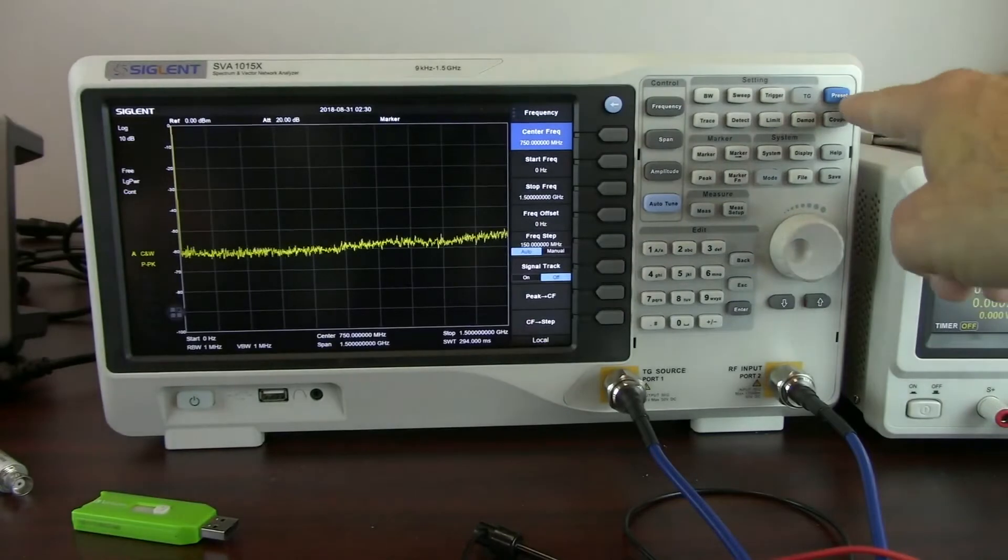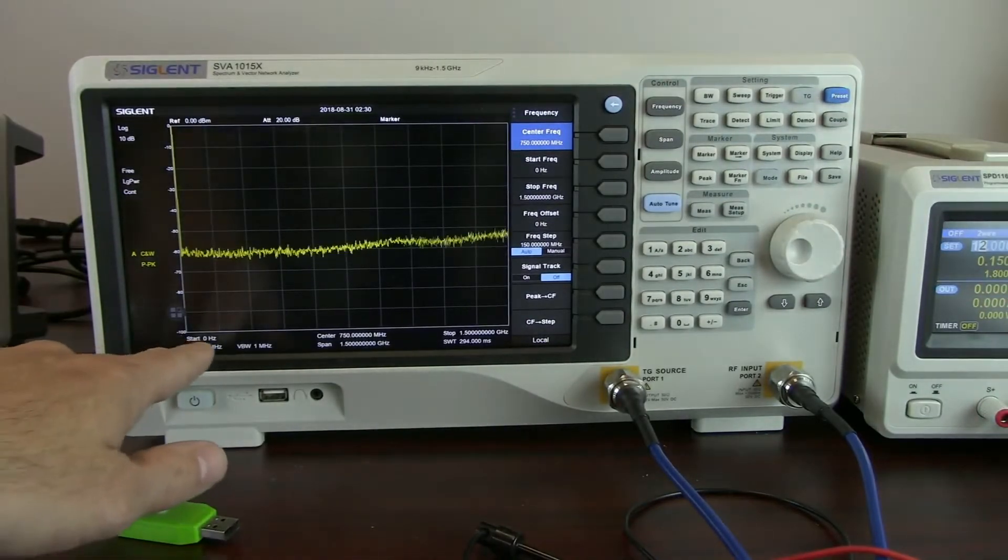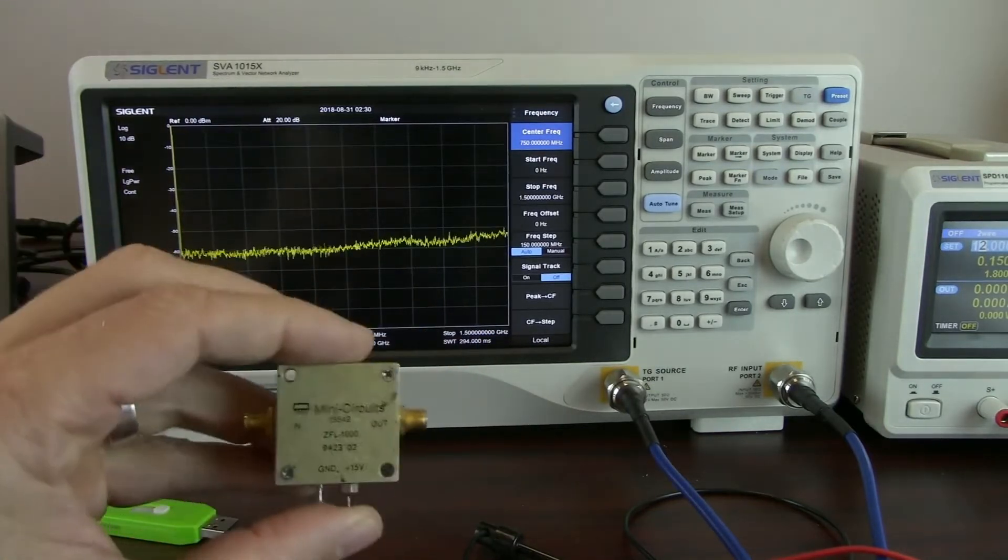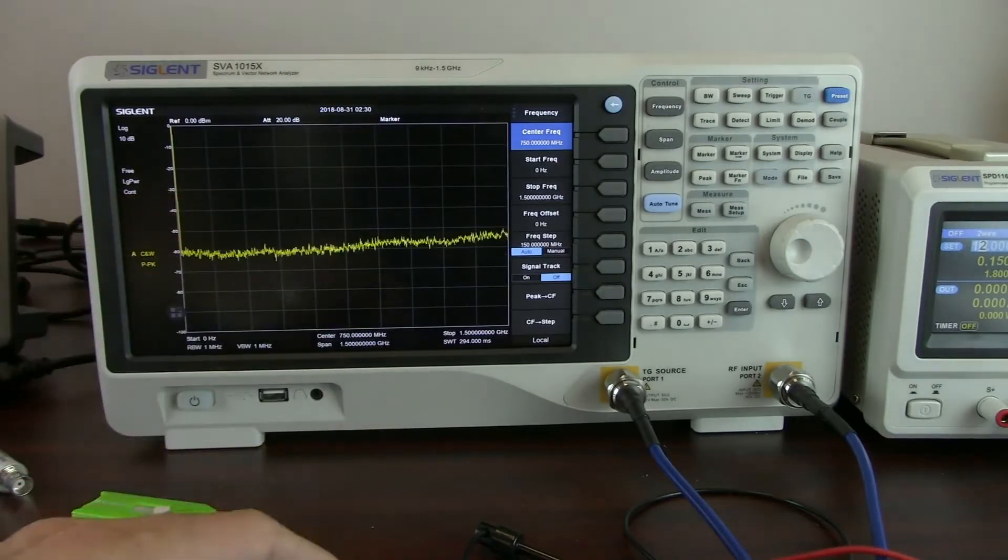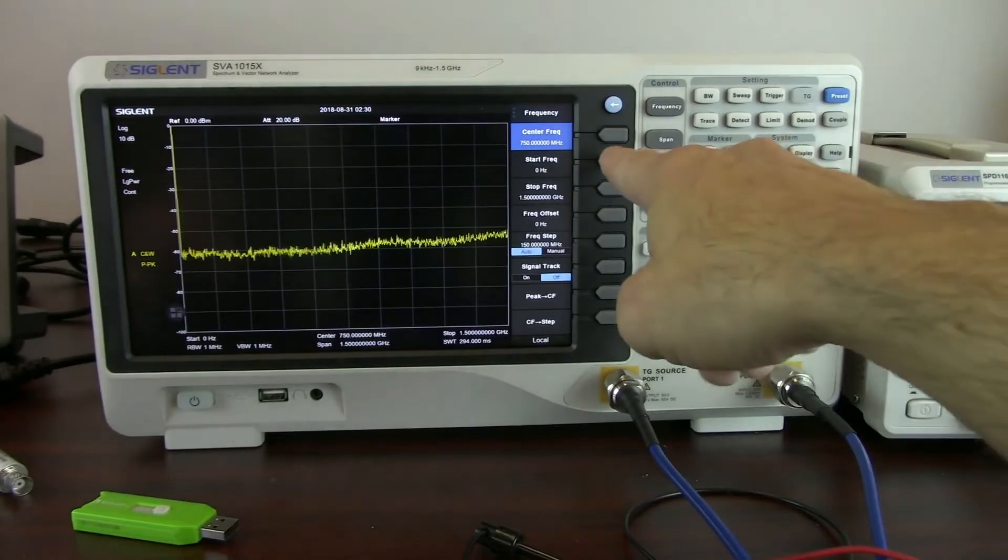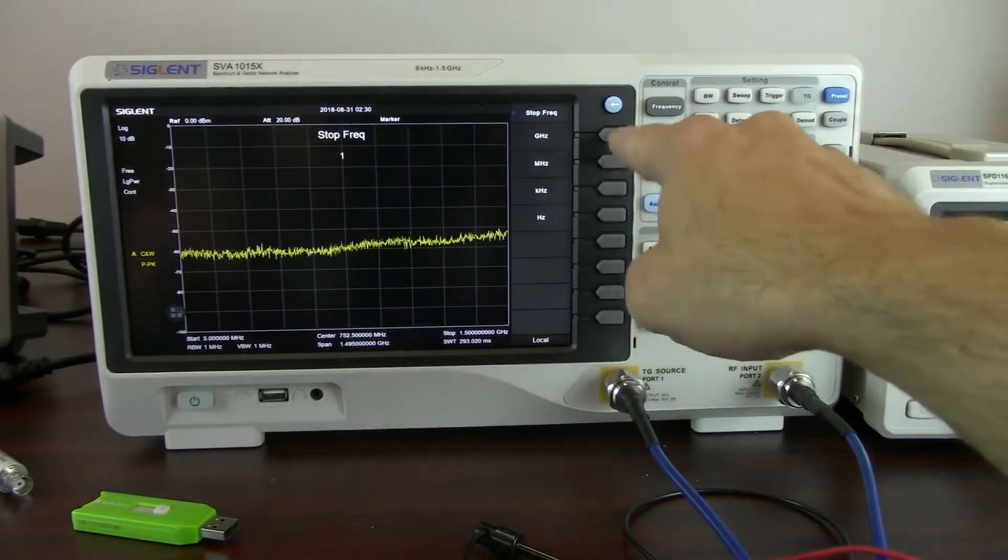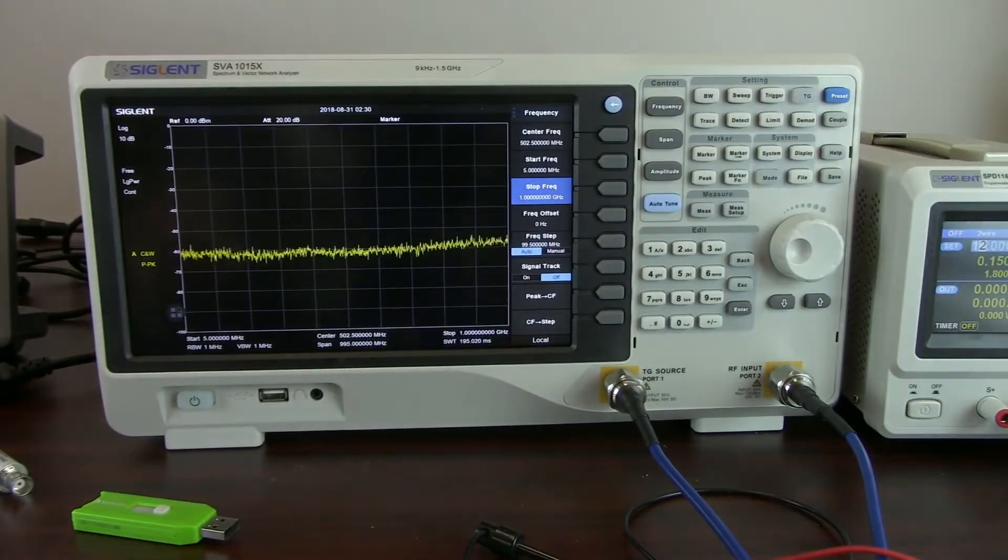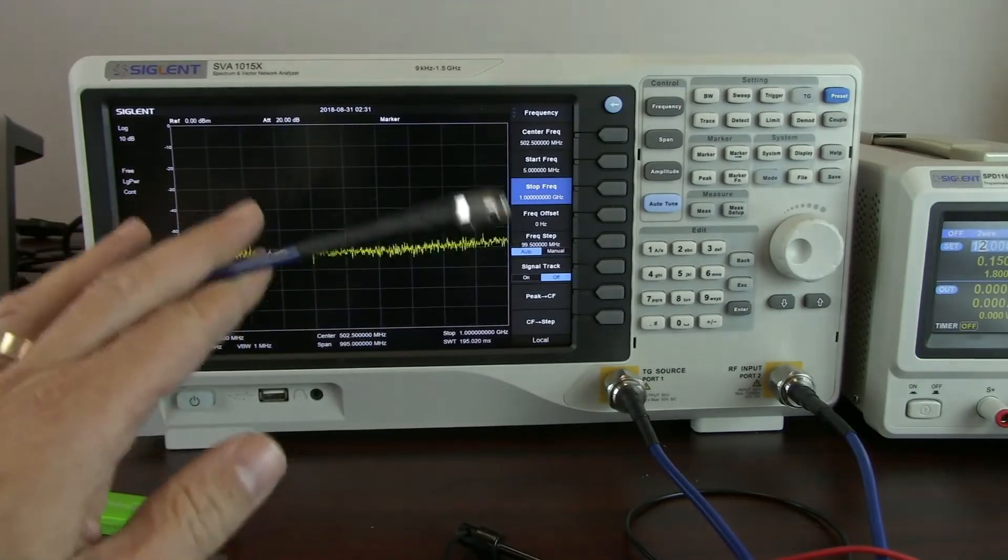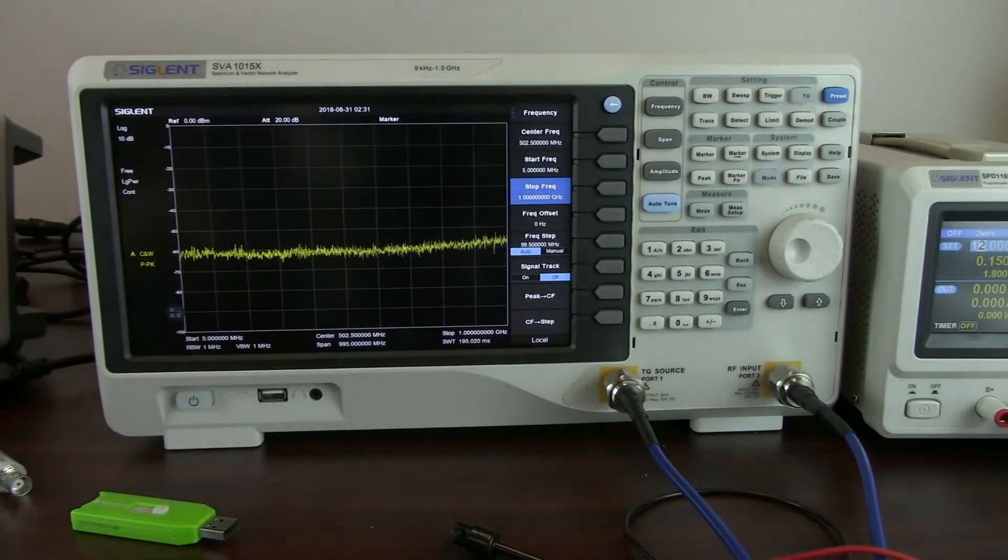In factory defaults, which can be reached here through the preset value, we can see we've got a start value of 0 hertz, we're going to sweep up to 1.5 gig. This particular amplifier works to 1 gig and the tracking generator on this instrument starts at 5 megahertz. So we're just going to go start frequency 5 megahertz, stop frequency 1 gig. So now we're sweeping from 5 meg to 1 gig, that means that when we turn on the tracking generator we're going to have an RF output that sweeps from 5 megahertz to 1 gigahertz.